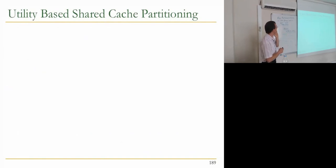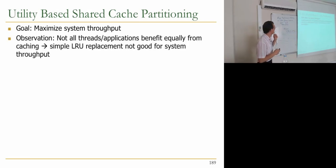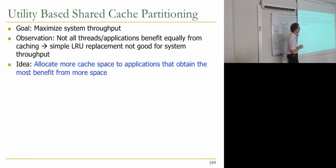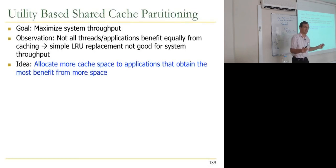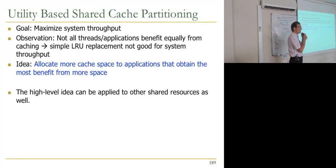The first idea — this is actually a general idea applicable to many resources — is utility-based partitioning of the cache. The goal is to maximize system throughput. The observation is that not all threads and applications benefit equally from caching, and simple LRU replacement is not good for system throughput. The idea is to allocate more cache space to applications that obtain the most benefit, computing the marginal utility of a cache block and assigning more cache to the application that gets more marginal utility.